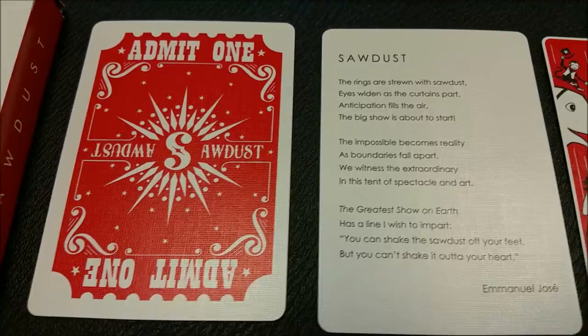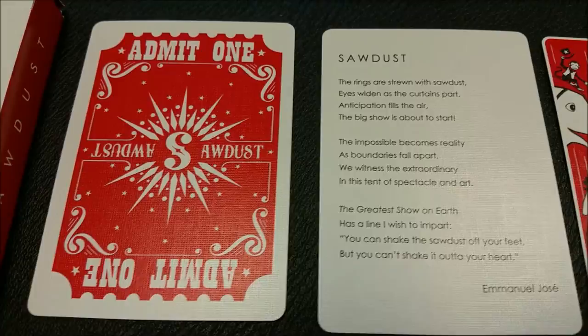This is your tuck case and your double backer. Here is your Sawdust ad card. And here are your two joker cards. You can see that it's a front and a back of the same picture.